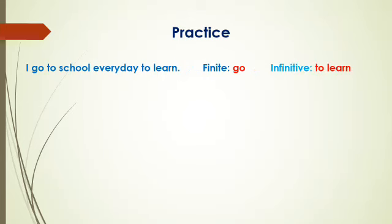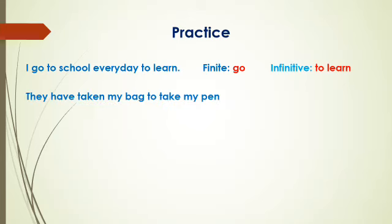'I go to school everyday to learn', 'They go to school everyday to learn', 'She goes to school everyday to learn' — the finite 'go' changes, but 'to learn' remains same. Next example: 'They have taken my bag to take my pen.' Which is the finite? The finite is 'have' — it comes next to the subject and changes depending on the subject. If we use 'she': 'She has taken my bag to take my pen.' So 'have' is finite. And 'to take' is the infinitive.